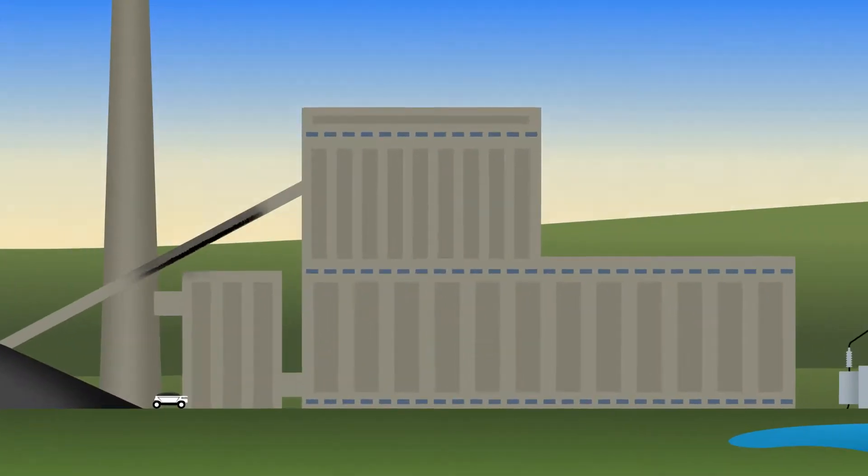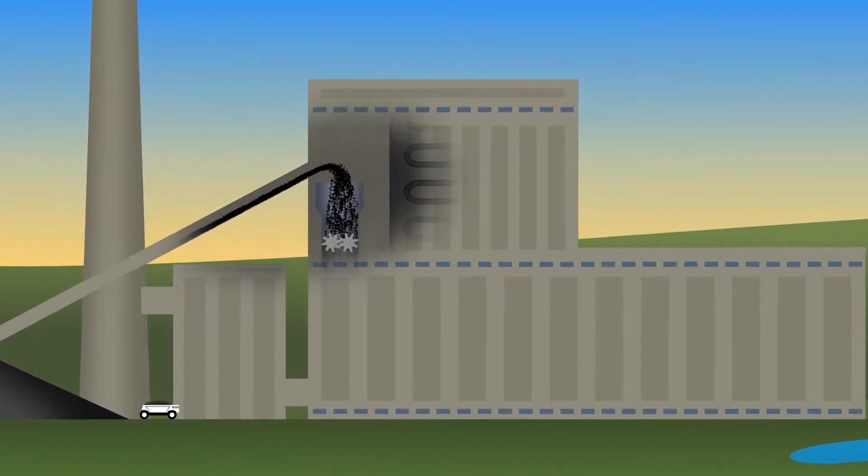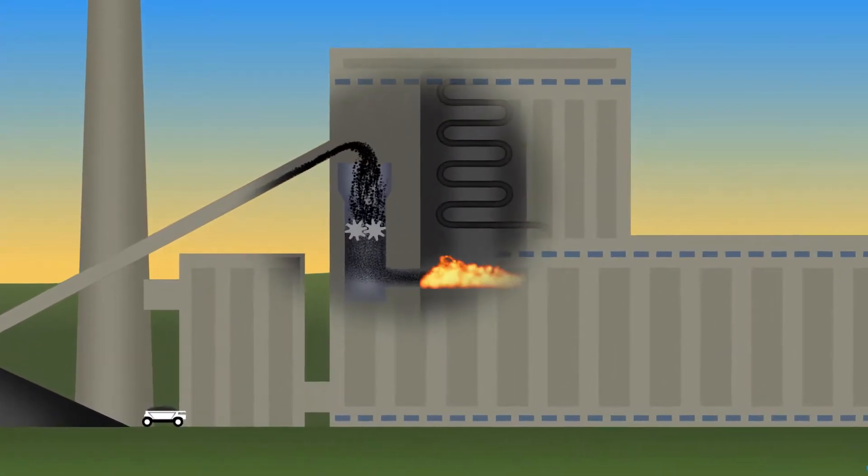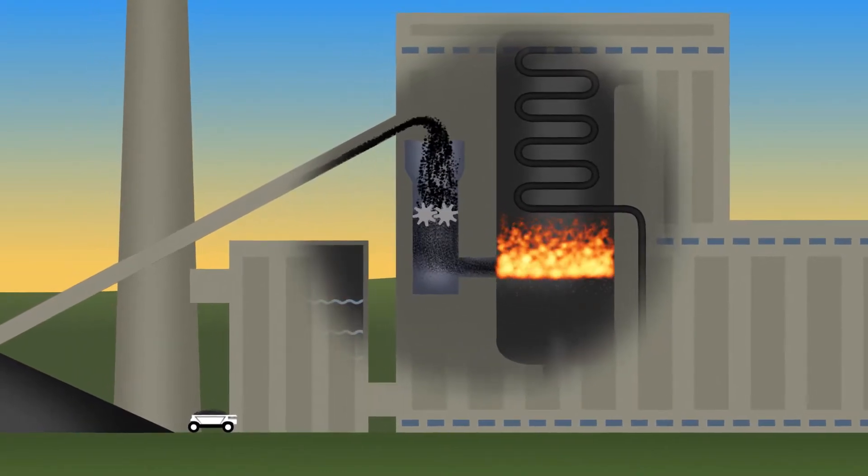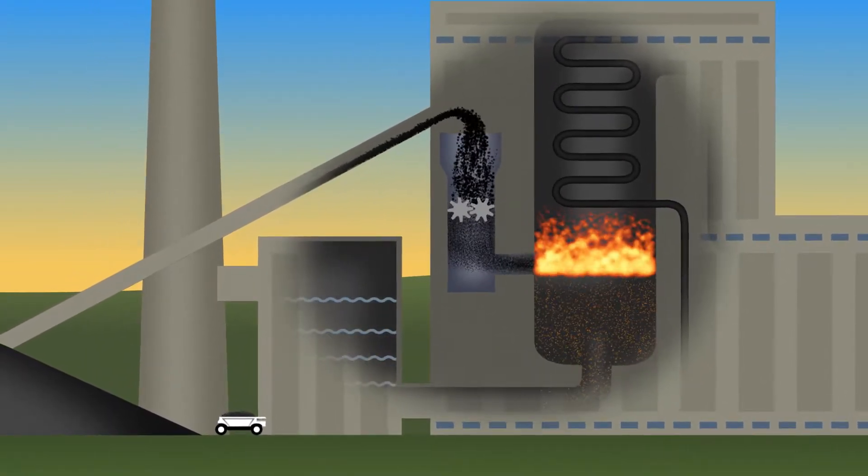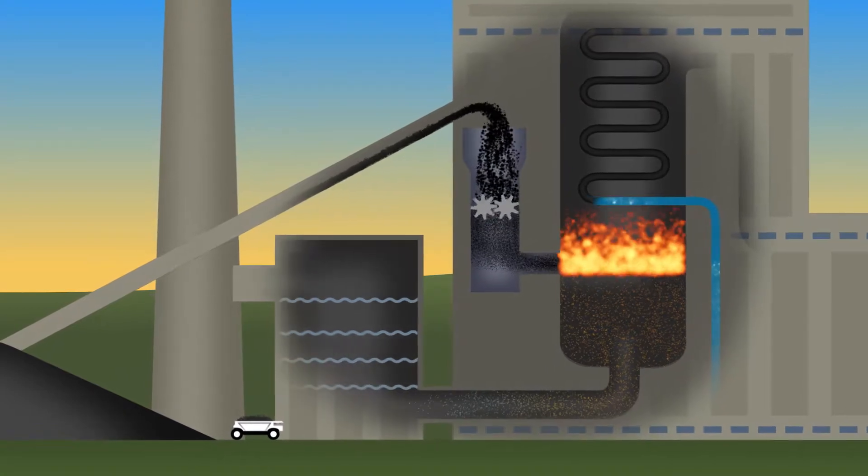At the power plant, the coal is crushed into a fine powder and blown into the boiler's firebox, an enormous furnace chamber many stories high suspended within the plant. It heats to nearly a thousand degrees.